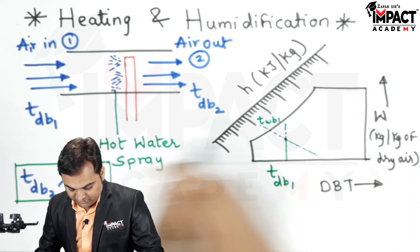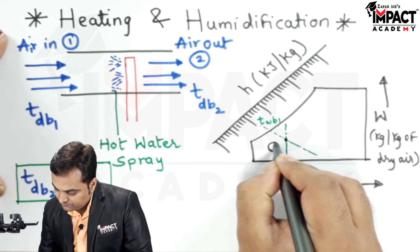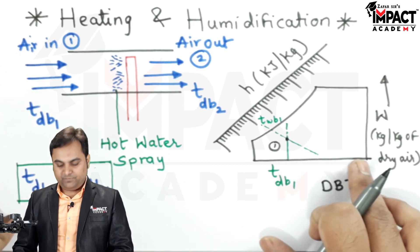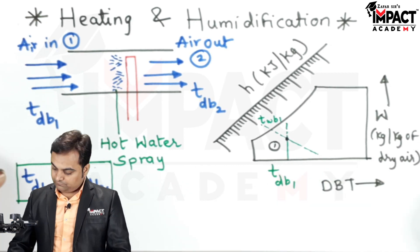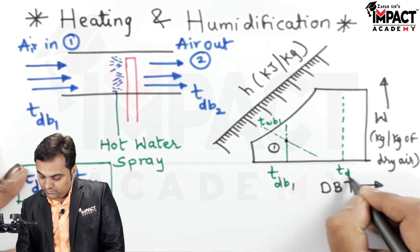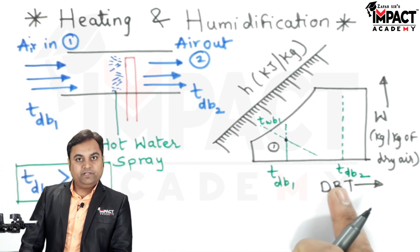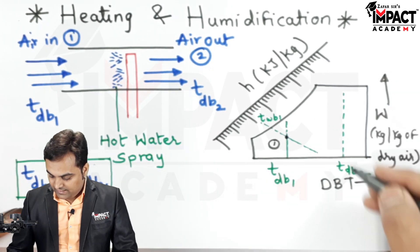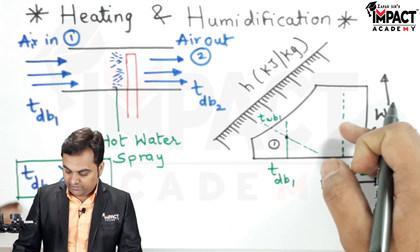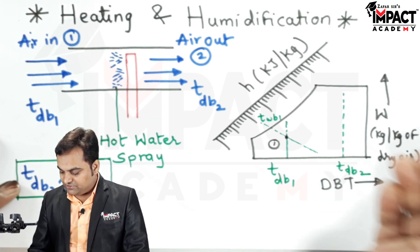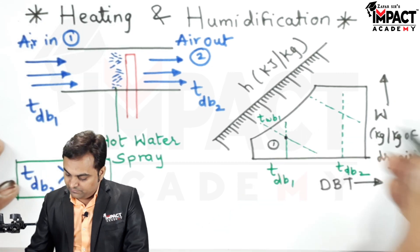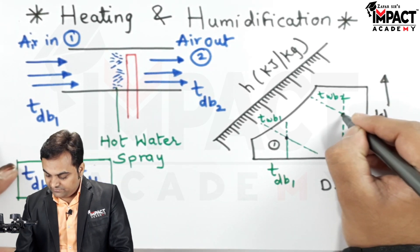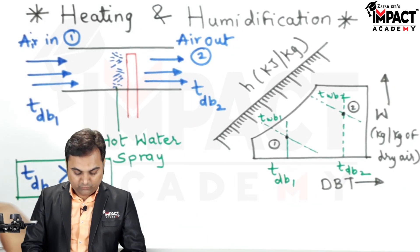Since the process is heating and humidification, point 2 must have a dry bulb temperature greater than point 1. For the outgoing air, we have dry bulb temperature tdb2, and if we also know another property such as wet bulb temperature twb2, the intersection of these gives us point number 2.